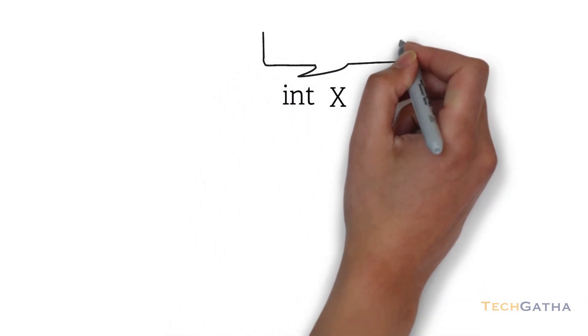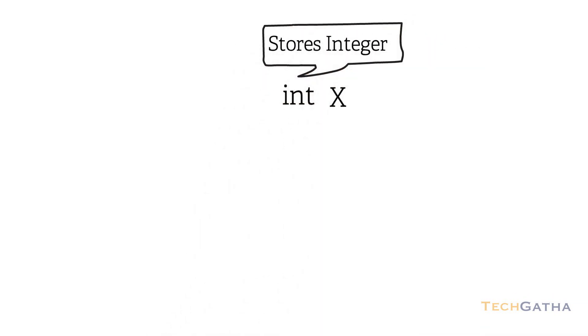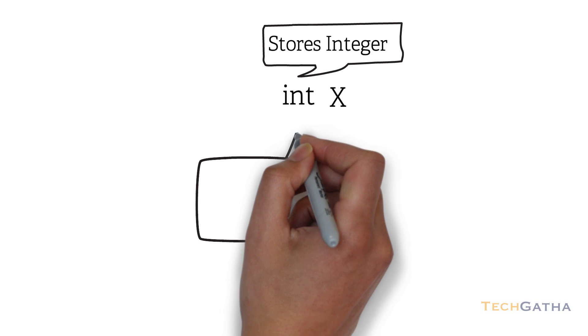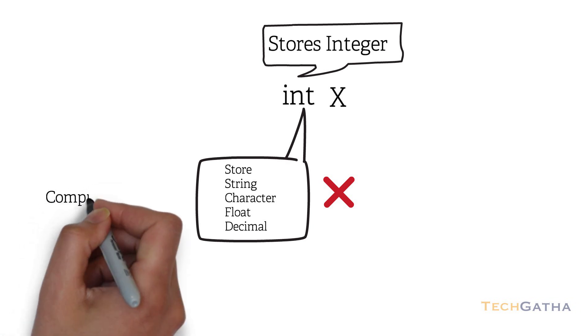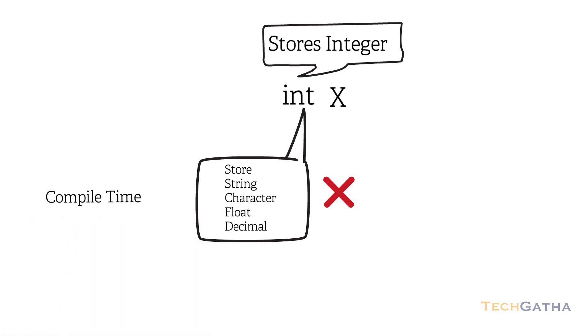If I declare a variable x and put a label int before it, then this variable can be used to store values of only integer types and other types of values cannot be stored. Since this declaration is done at compile time, the languages that exhibit this behavior are called statically typed languages.